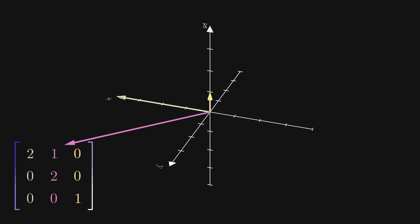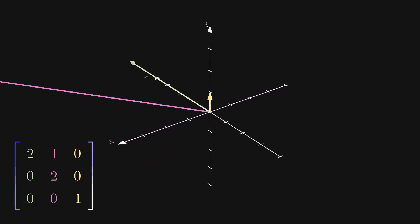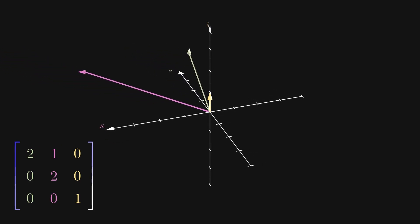For this transformation, there is no set of three basis vectors, real or complex, that are scaled by this transformation. No matter what you choose, you're always going to have them changing direction.